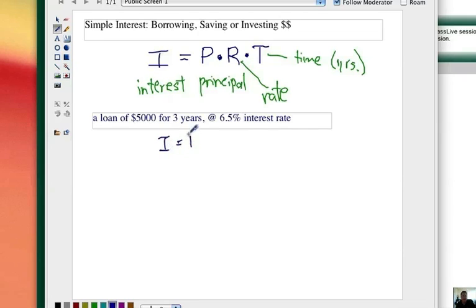I equals PRT. It's all multiplication. You want to know the interest that you would have to pay back. And then at the end, we're going to add it to the $5,000 to see how much you totally have to pay back.